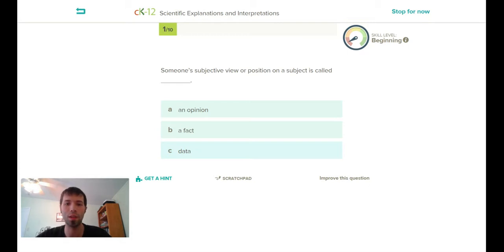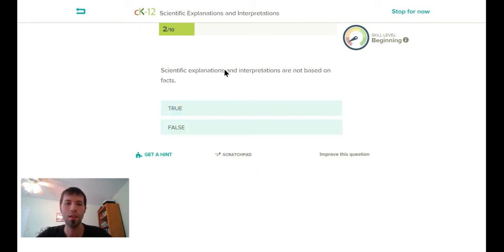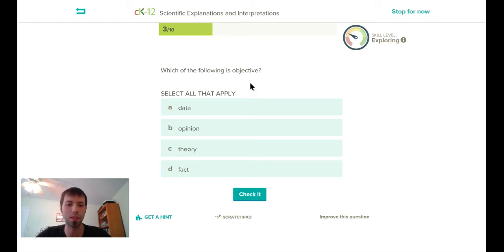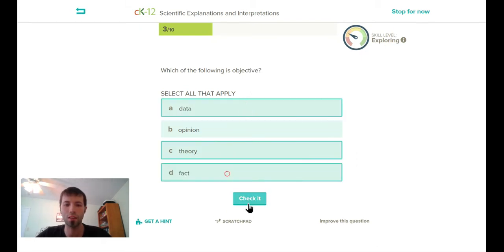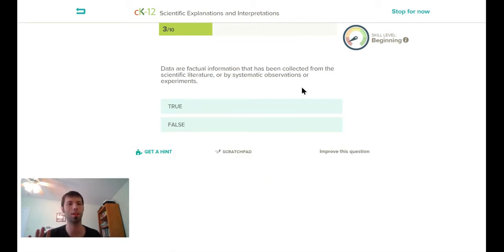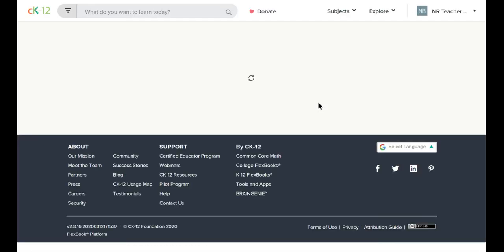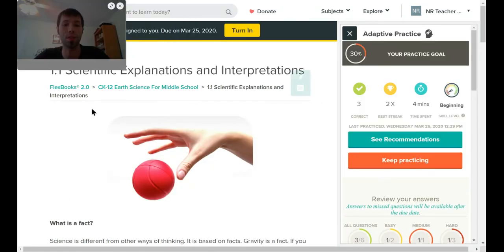I'm gonna get a couple more correct so I can show you how to turn in the assignment. Someone's subjective view or position is called an opinion. Scientific explanations and interpretations are not based on facts - that's false. Get one more correct. Which of the following is objective? I think data, theory, and fact are objective. Oh, I got one wrong. Okay, I got three out of ten correct. I'm gonna stop right here, don't want to make the video too long. Let's say I'm trying to get ten questions correct, but three is the best I could do for now. So what you do, even if you get ten out of ten, there's gonna be a stop for now button up here.